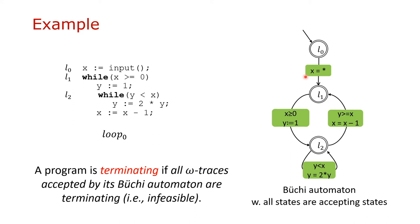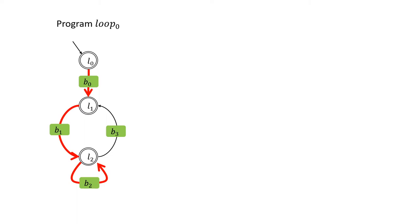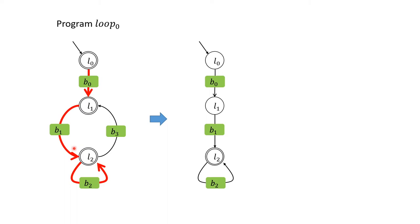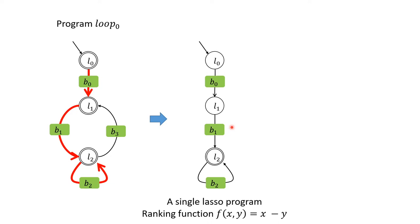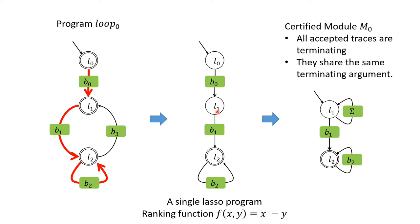We use B0, B1, B2, and B3 to represent the basic blocks of the program, and the alphabet of this Büchi automaton is the set of all these blocks. To prove the termination of all omega traces, we first take a lasso-shaped path from this automaton and then try to prove the termination of this single path. If we can prove it using some ranking function, we then try to generalize this simple path to a certified module. A certified module may accept a set of omega traces.